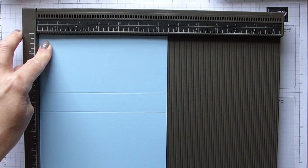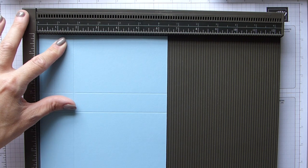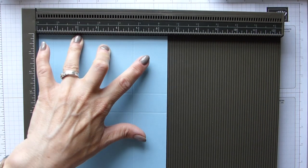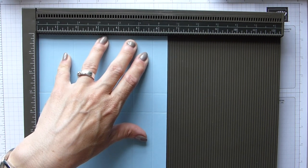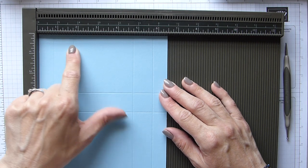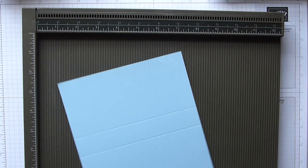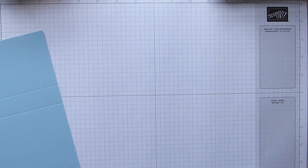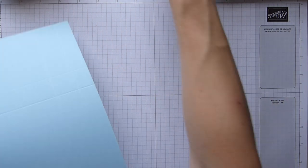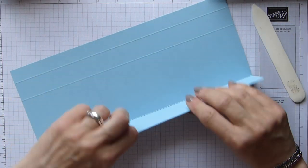We're going to rotate clockwise, then score on the short side at three-quarters of an inch, one and three-quarters, four and three-quarters, and five and three-quarters. In centimeters that's 2, 4.5, 12.5, and 15.